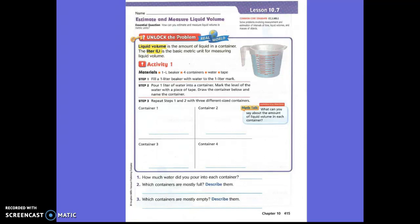But let's go ahead and read the top part of our problem. Liquid volume is the amount of liquid in a container. The litter is... I'm hot, I'm hot. It's not a litter, it's a liter. A liter is the basic metric unit for measuring liquid volume.